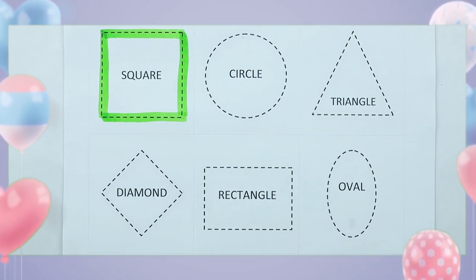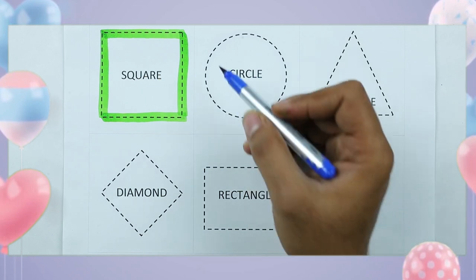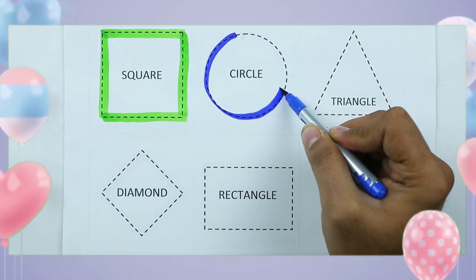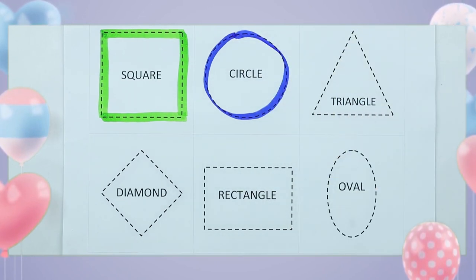It's called square with green color. Circle. Round, round, round, round. It's a circle with blue color.